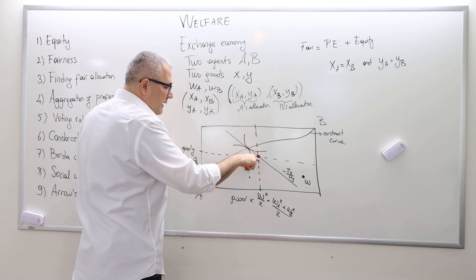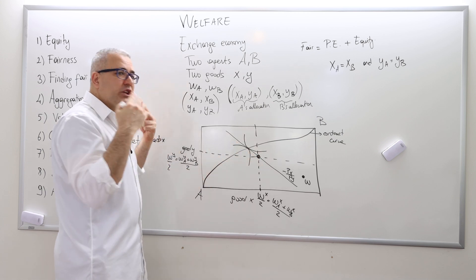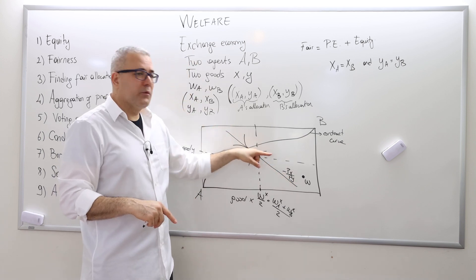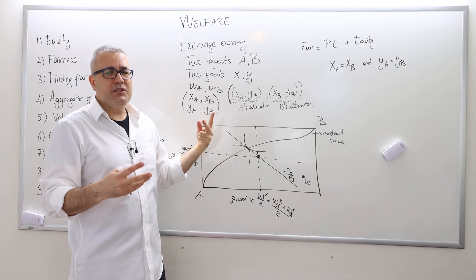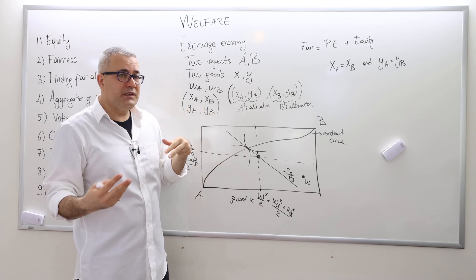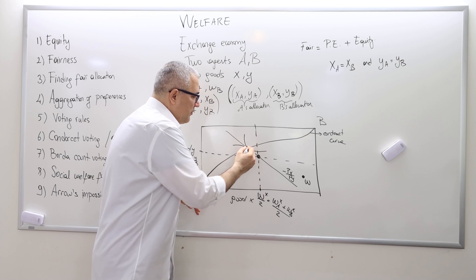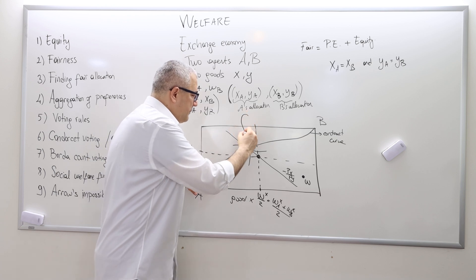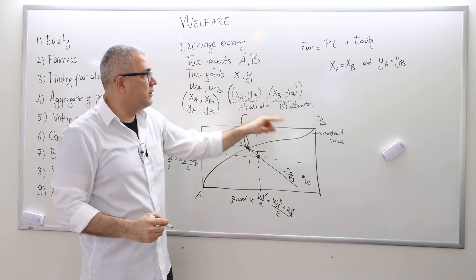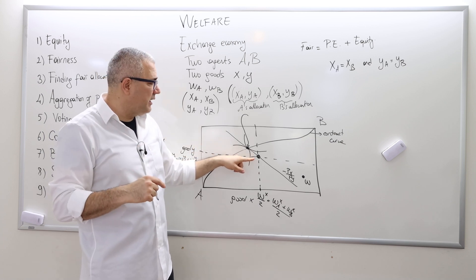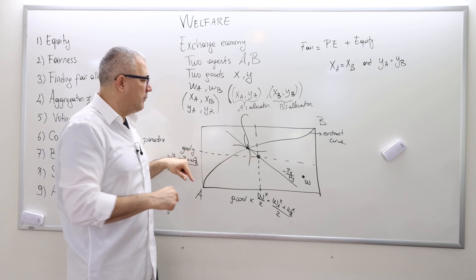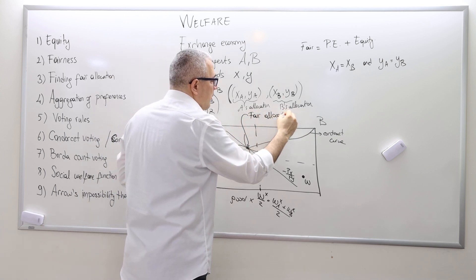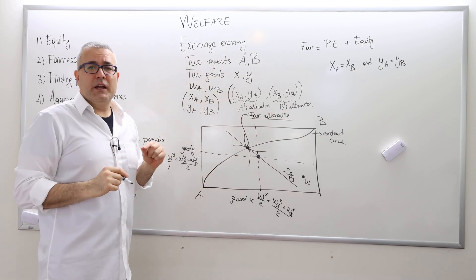Their initial endowment, we assume, is the point where they split the total number of good X and good Y equally. This point — divided by 2 — represents how many good X agents A and B have, and WY represents how many good Y each agent has. So this midpoint is the starting point and we let them trade. In a general equilibrium framework there's going to be a hypothetical price for both goods, and the agents maximize their utilities subject to their budget constraint, ending up trading to a point on the contract curve. Because the starting point is the equal division of the initial endowments, this final point is a fair allocation.